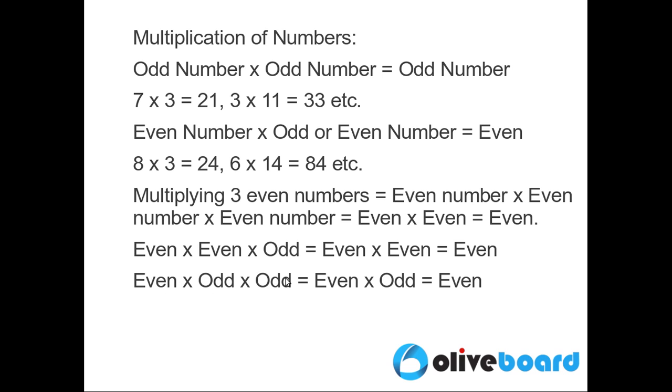If we multiply 2 odd numbers with an even number, the multiplication of 2 odd numbers is an odd number, so even into odd will again be an even number.